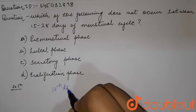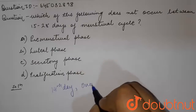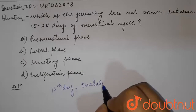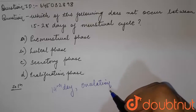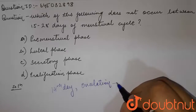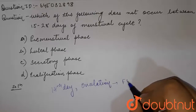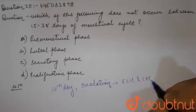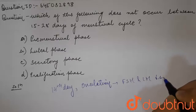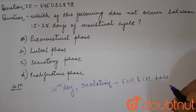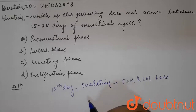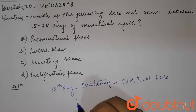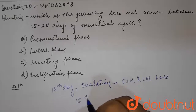On the 14th day, ovulation occurs in the normal reproductive cycle. At that time, levels of FSH and LH decrease, leading to degradation of the corpus luteum, and hence there is the release of the egg.